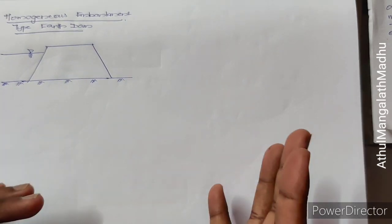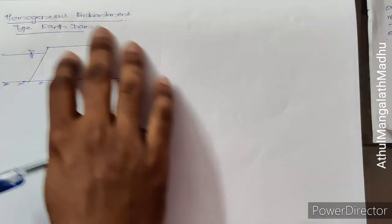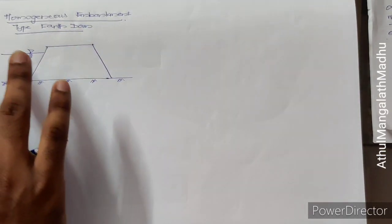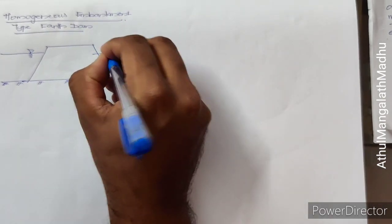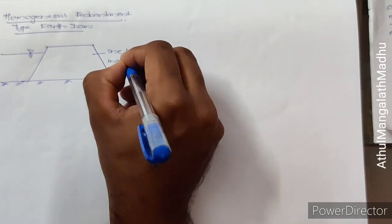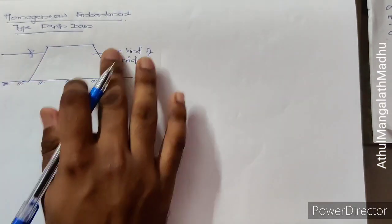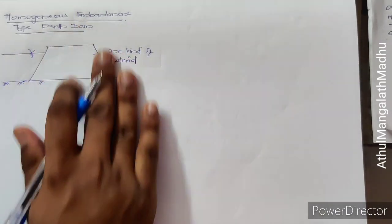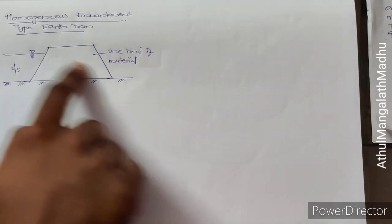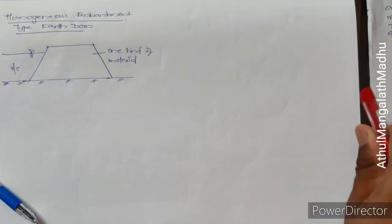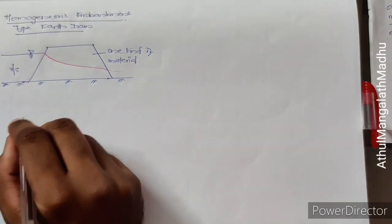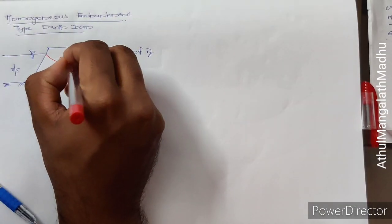The first type is the homogenous embankment type dam, which uses only one kind of earthen material throughout — no combination of materials, just a single type. Water is stored on the upstream side. Since the material is not rigid, water seeps through and follows a seepage line downward. This line is called the phreatic line.